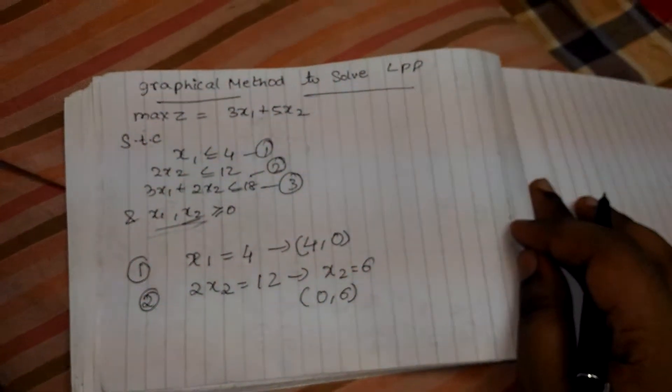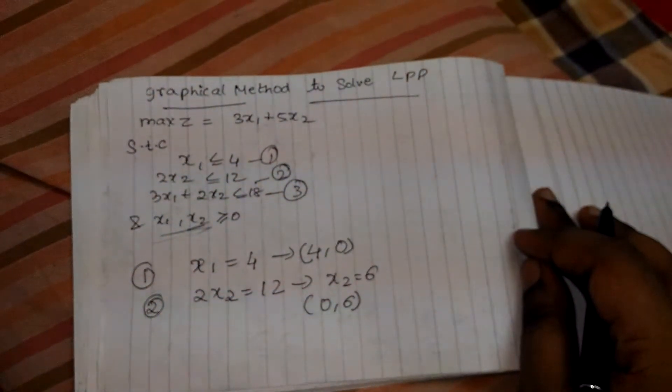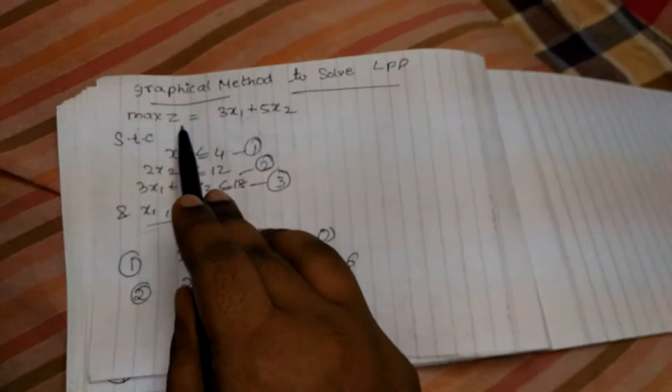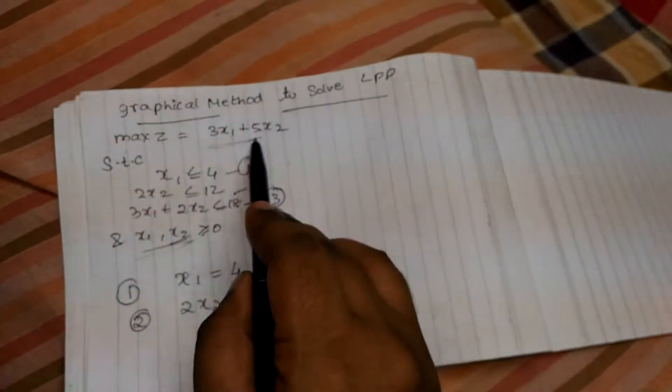Hello friends, I am going to show a problem on graphical method to solve LPP. So this is the constraint, max z equal to 3x1 plus 5x2. This is the objective function.